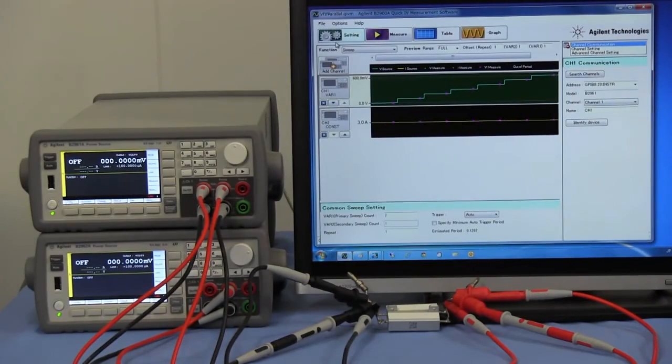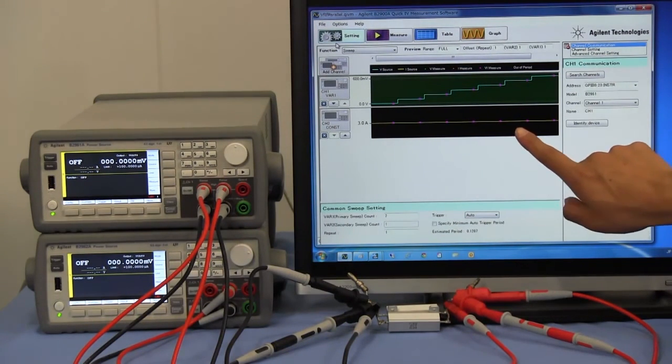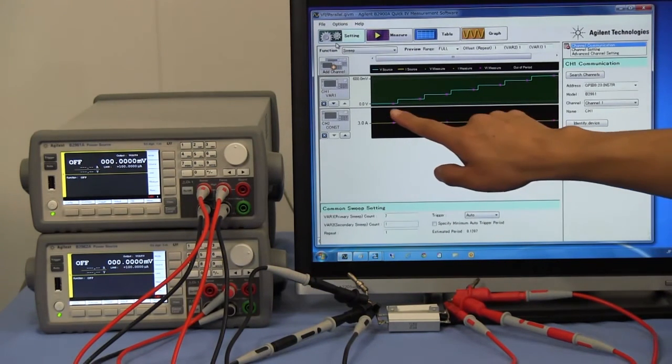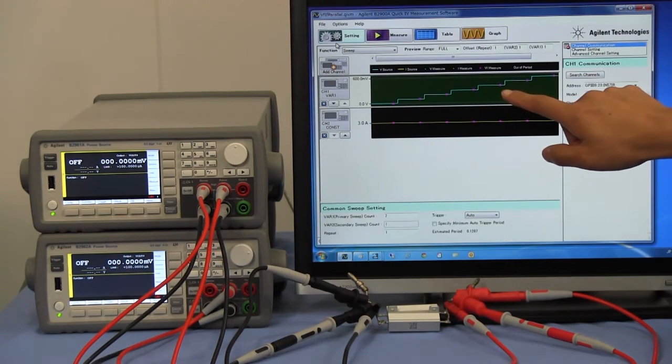Agilent B2960A also supports voltage and current measurement functions. This is QuickIV software. You can easily perform the voltage sweep measurement using this software. This time, I swept the output voltage from 0 volts to 600 millivolts with 100 millivolt step.